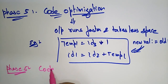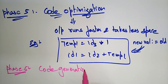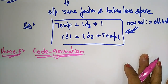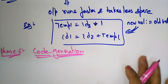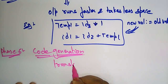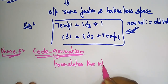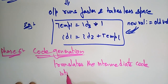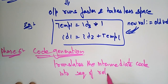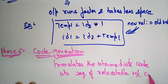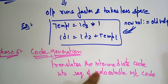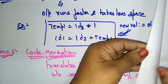Moving to phase 6, the last phase: code generation. The code generator translates the intermediate code into a sequence of relocatable machine code. These are the different phases present in the compiler. Let's see a code generation example.